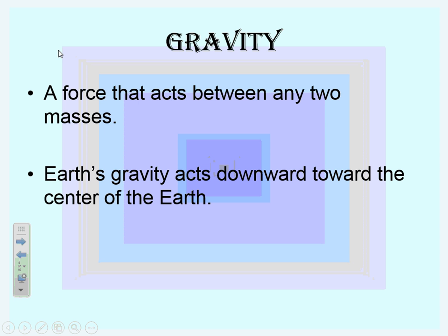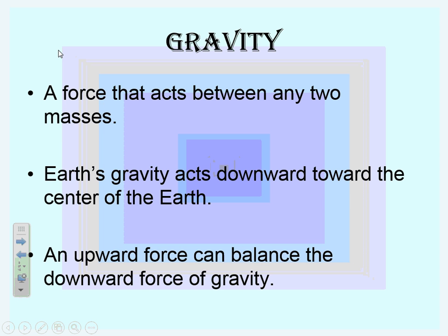So Earth's gravity acts downward towards the center of Earth because Earth is a large object. An upward force can counter the downward force of gravity. So it's possible on Earth to travel upward faster than gravity pulls you down, and if you do that, you will experience weightlessness. And remind me in class, I'll probably try and see if I can find a video of what they call the Vomit Comet, which is the plane that they use to train astronauts for weightlessness.